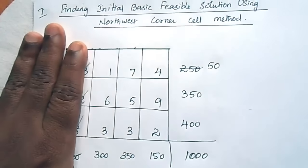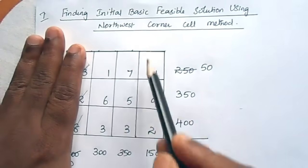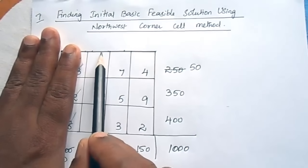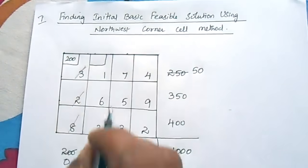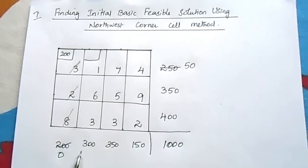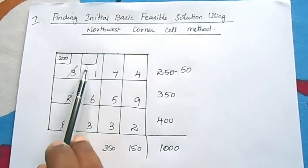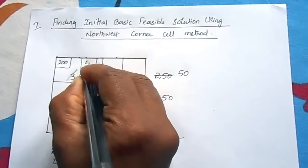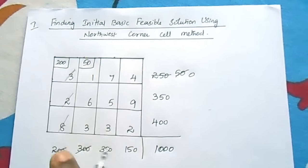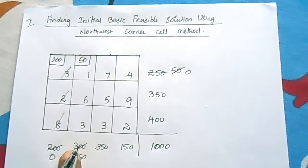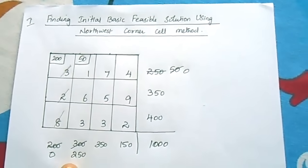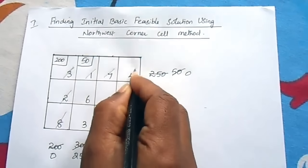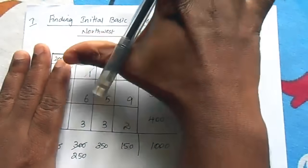Now the Northwest corner of the remaining table is the first row, second column. The row value is 50 and the column value is 300. The least is 50, so allocate 50 here. The first row value becomes 0, so cancel the first row. The remaining second column balance is 250.